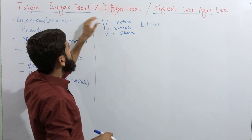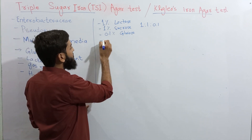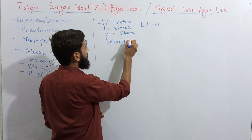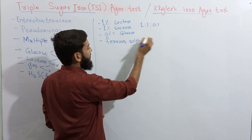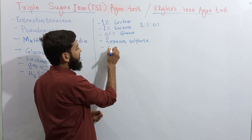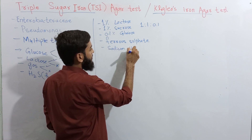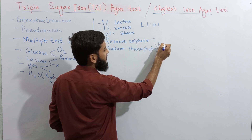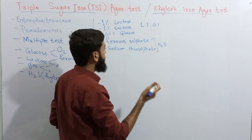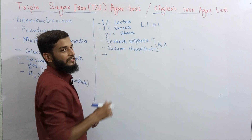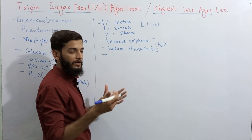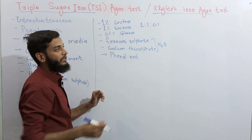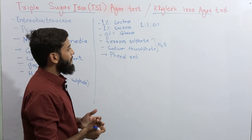As the name suggests, TSI agar also contains iron, which is present in the form of ferrous sulfate. This medium also contains sodium thiosulfate. These two components are used in the identification of hydrogen sulfide production. The very important part of this TSI agar is the pH indicator, which is phenol red.